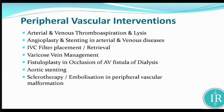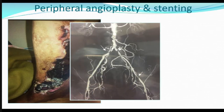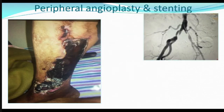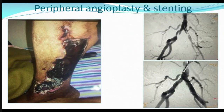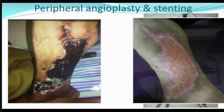Peripheral vascular interventions include arterial and venous thrombus aspiration. For example, an arterial ulcer with bilateral common iliac block seen on CT angiography — on angiography this is a clear bilateral block and we can place a stent directly. After one month, it is completely healed.